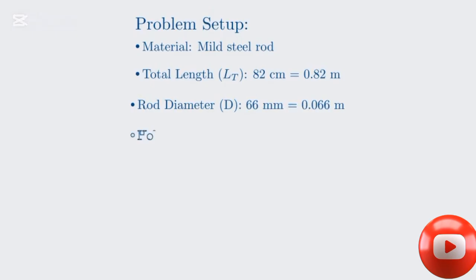A hole is drilled at one end, which has a diameter of 32 millimeters, or 0.032 meters. This hole is drilled to a depth of 15 centimeters, which is 0.15 meters.